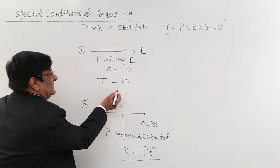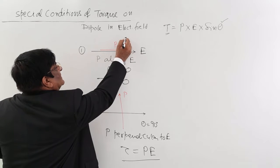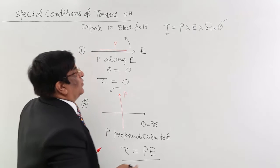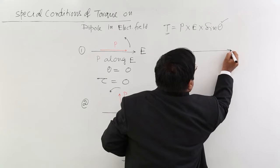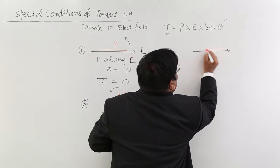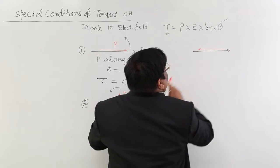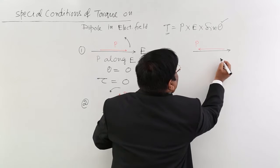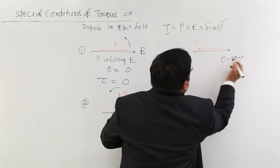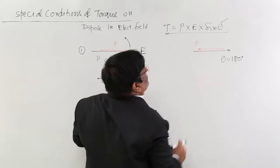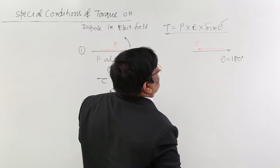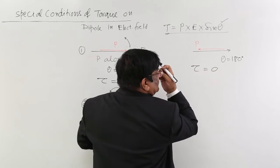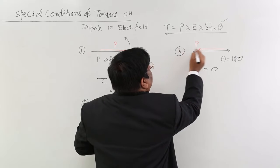Now we rotate the dipole further in the anticlockwise direction — that is positive rotation. Rotating more, we get the third condition. P is further rotated and directed opposite to E. The angle theta is now 180 degrees. Putting 180 here, sine 180 is again 0, so torque is 0. This is the third condition.